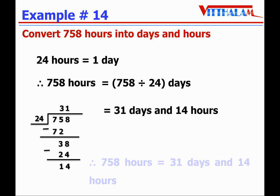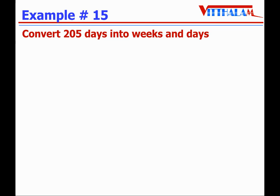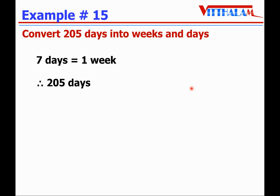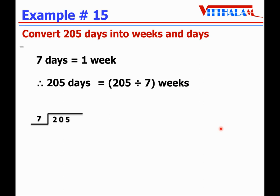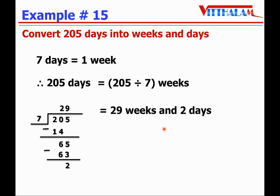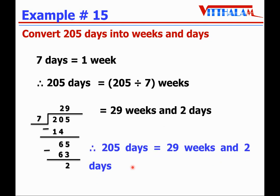Let's go for another one: convert 205 days into weeks and days. 7 days equals 1 week, therefore 205 divided by 7. 7 times 2 is 14; remainder is 6. Bring down 5: 65 divided by 7 — 7 times 9 is 63; 65 minus 63 is 2. The quotient is 29 weeks and the remainder is 2 days. Hence 205 days equals 29 weeks and 2 days.